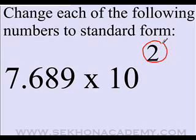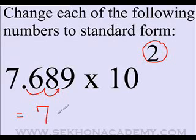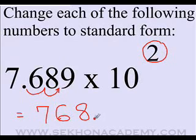In this case, we should move the point twice to the right. But after moving the point twice to the right, we get 768.9.